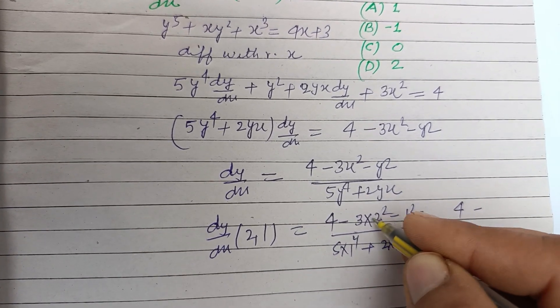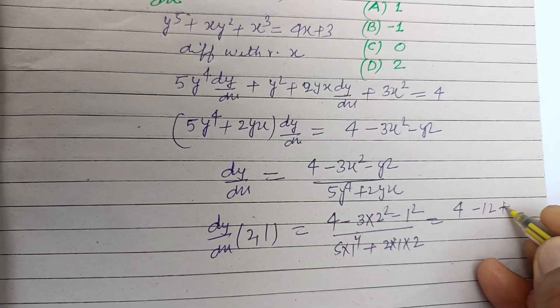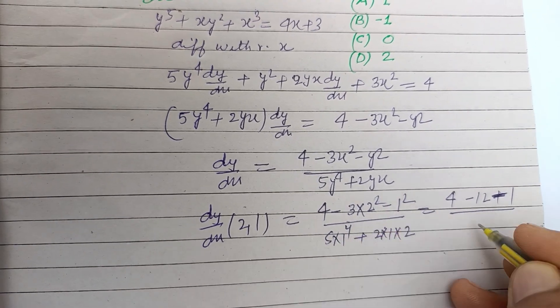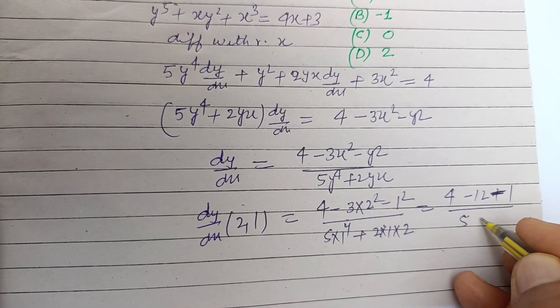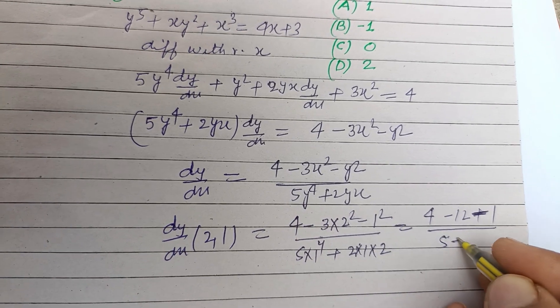So this is 4... 3 times 4 is 12, plus minus 1, over 1 into 5 is 5, and this is 2 times 2 is 4.